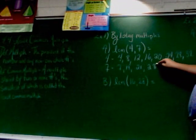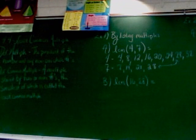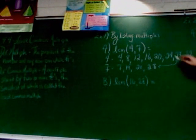And now we can stop because we have a match. As you can see, 28 is on both lists. So the least common multiple of 4 and 7 is 28.